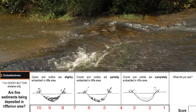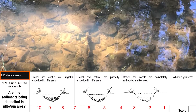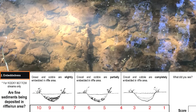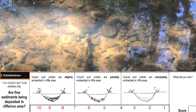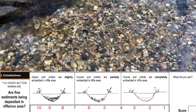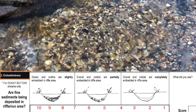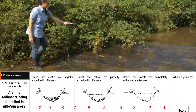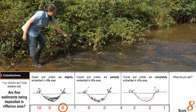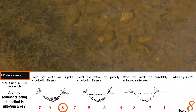Embeddedness is only assessed in rocky bottom streams, as it rates how much sediment is clogging pore spaces between gravel, cobble, and boulders where they exist. If your stream does not have a rocky bottom, skip this element. This stream does not have gravel or cobble, but it does have some fine sediment deposits.